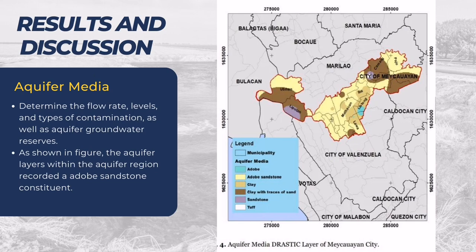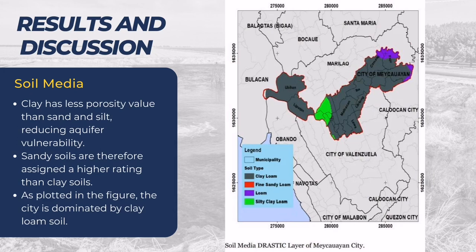For the aquifer media, as shown in the figure, following the color light yellow in the legend, the aquifer layers within the aquifer region recorded an adobe sandstone constituent. For soil media in Meikawayan City, the material is composed of fine sandy loam, silty clay loam, loam, and most areas are clay loam.